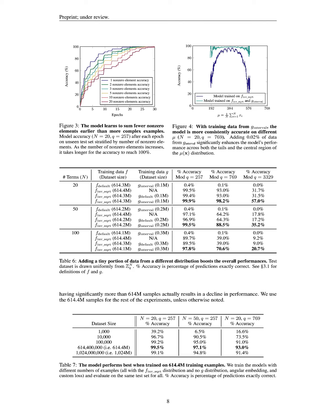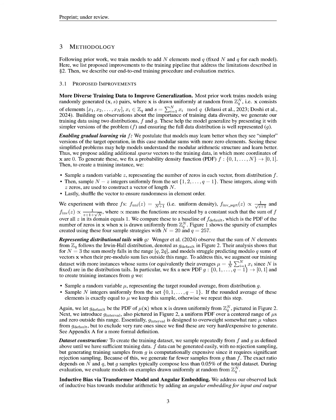During training, we utilize a custom loss function that combines mean squared error with a penalty term to prevent convergence at local minima, ensuring the model learns effectively. After training, when we input a new set of values, the model computes the sum s = Σ(i=1 to 20) xᵢ mod 257.